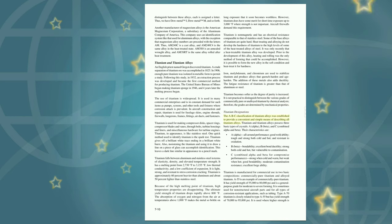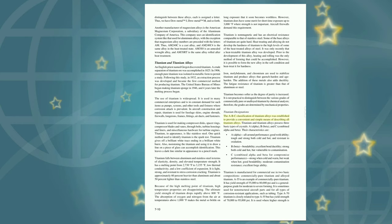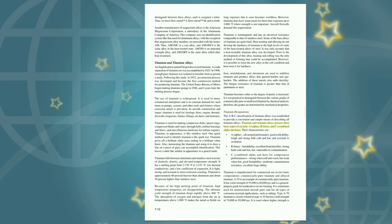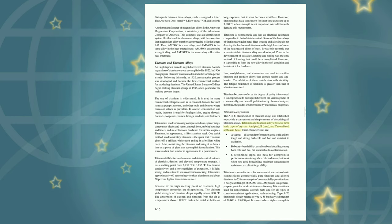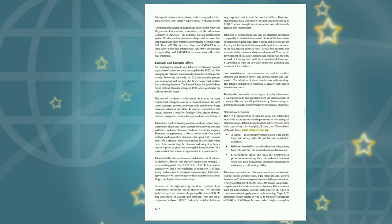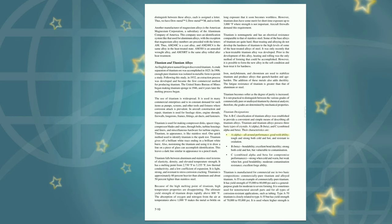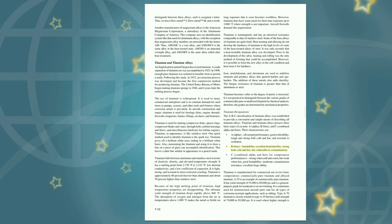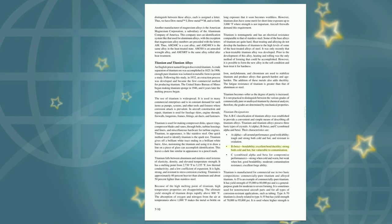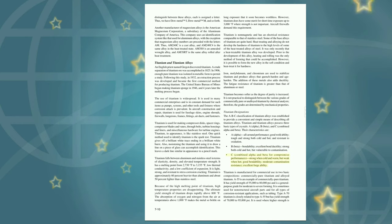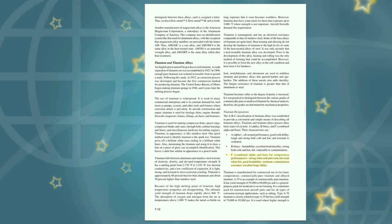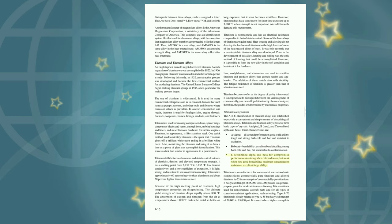Titanium designations: The ABC classification of titanium alloys was established to provide a convenient and simple means of describing all titanium alloys. Titanium and titanium alloys possess three basic types of crystals: A (alpha), B (beta), and C (combined alpha and beta). Alpha characteristics include all-around performance, good weldability, tough and strong both cold and hot, and resistant to oxidation. Beta characteristics include excellent bend ductility and strong both cold and hot, but vulnerable to contamination. Combined alpha and beta offers compromised performance—strong when cold and warm but weak when hot, with good bendability, moderate contamination resistance, and excellent forgeability.